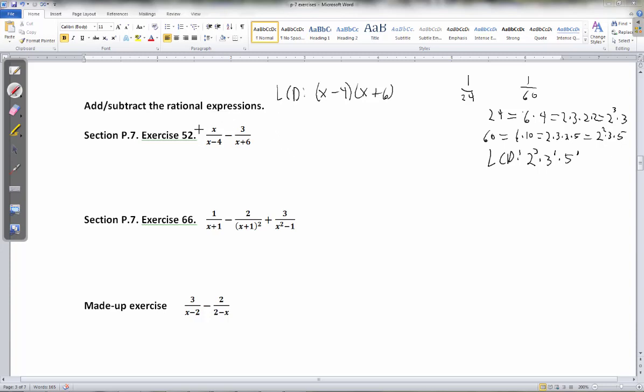So this one's actually fairly simple. All I need to do is multiply in the piece I'm missing. So I have x plus 6 times that, x plus 6 times that, x minus 4 times here, x minus 4 times here. I highly recommend for the next step, you just write it as a single fraction with multiplications on the top. So this would be x times x plus 6 minus 3 times x minus 4.